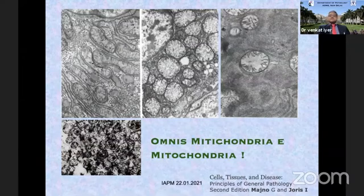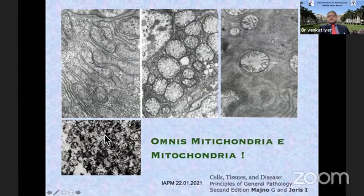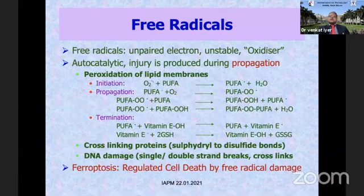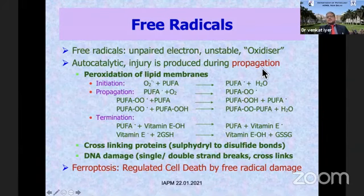The telltale sign of massive damage is the amorphous densities which can be seen in mitochondria. The other concept which we have understood for the last 50 years is free radical injury. Free radicals have unpaired electrons which are unstable — these are the oxidizers. They oxidize whatever they touch and they are autocatalytic, meaning more free radicals are produced at the end of the injury. The injury therefore occurs during a propagation reaction.